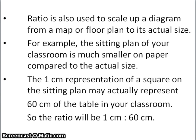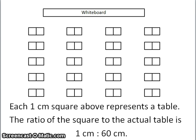Now let's look at this classroom seating plan. Each square is 1 cm in length and 1 cm in breadth. It actually represents a table in the classroom which is 60 cm in length and 60 cm in breadth. As such, the ratio of the square on the seating plan to the actual table is 1 cm to 60 cm.